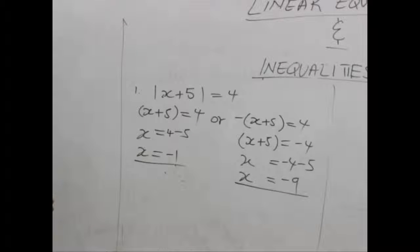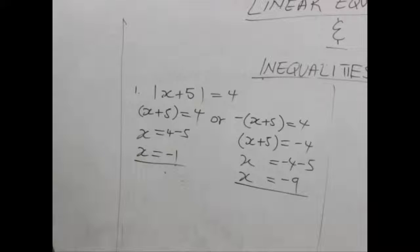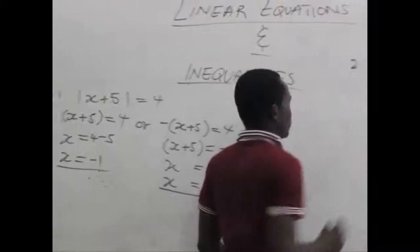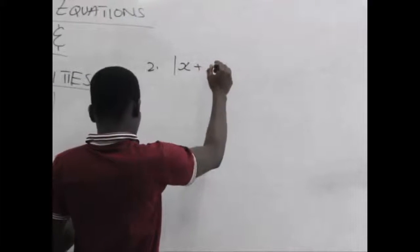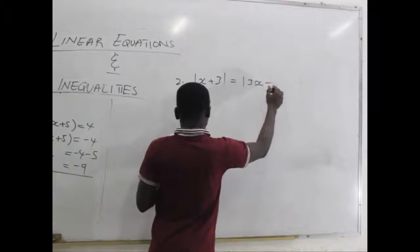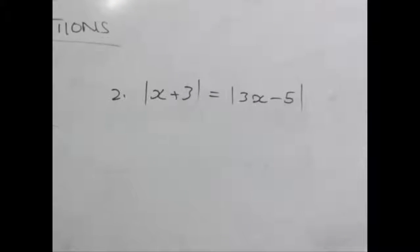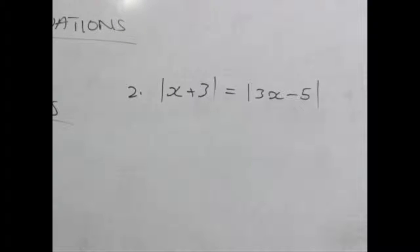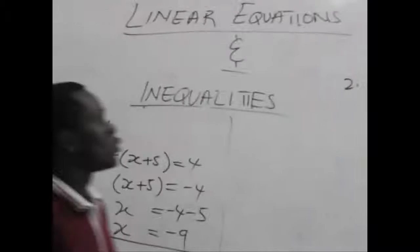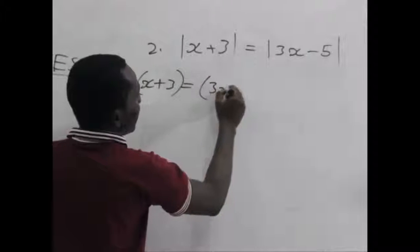Don't forget to work both sides. Now let's take a second example and see how to work when we have two absolute functions in one equation. So for example 2, we have the absolute value of x plus 3 equals the absolute value of 3x minus 5. Here we can see there are two absolute functions in this equation.